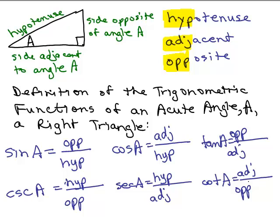You have to memorize these. For sine and cosine, the hypotenuse is in the denominator. For sine it's opposite over hypotenuse, and for cosine it's adjacent over hypotenuse. One way to remember: C for cosine comes before S for sine, and A for adjacent comes before O for opposite. And you have to remember that tangent is opposite over adjacent. There's also a mnemonic for this.